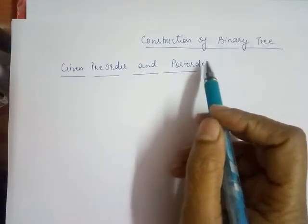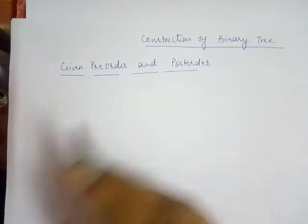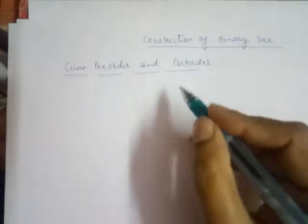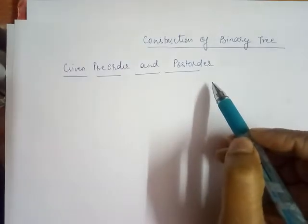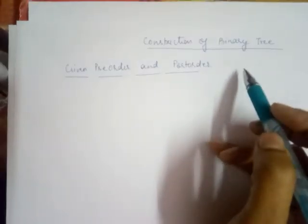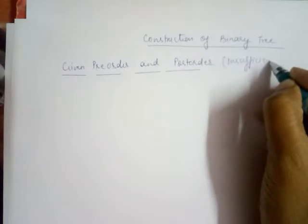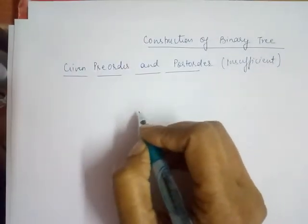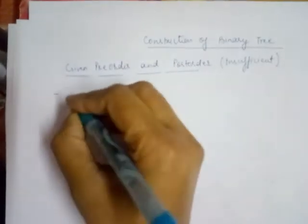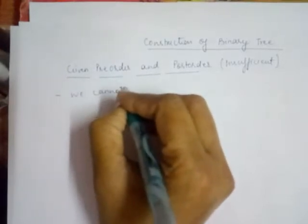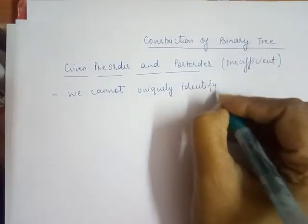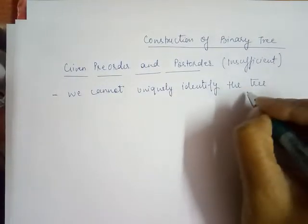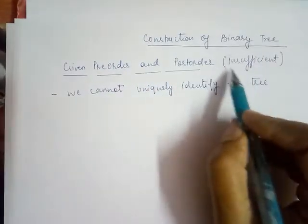Today's topic is constructing a binary tree when pre-order and post-order traversal is given. This topic is very important because if pre-order and post-order traversal is given and we have to construct a binary tree with the help of these two orders, the information is insufficient to construct a unique binary tree. We cannot uniquely identify the tree when pre-order and post-order are given.